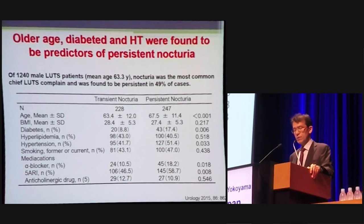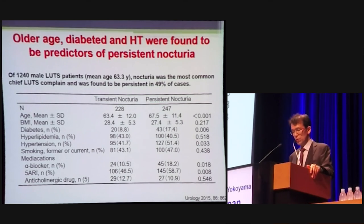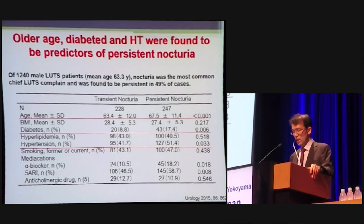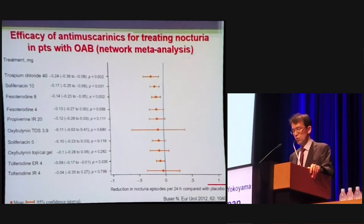Of 1,200 male LUTS patients, nocturia was found to be persistent in 49% of cases. When comparing patients with transient versus persistent nocturia, older age and lifestyle-related diseases — diabetes and hypertension — were found to be predictors for persistent nocturia.